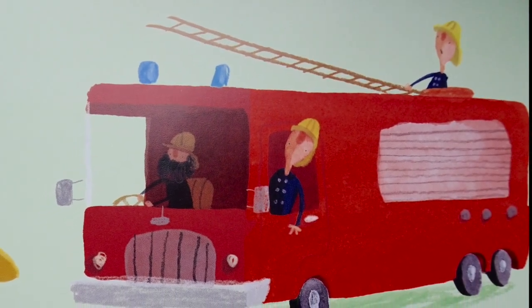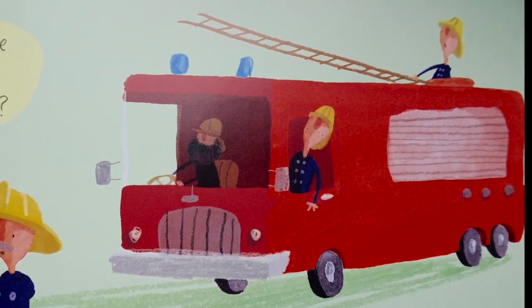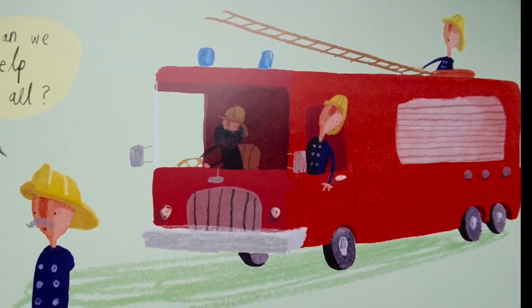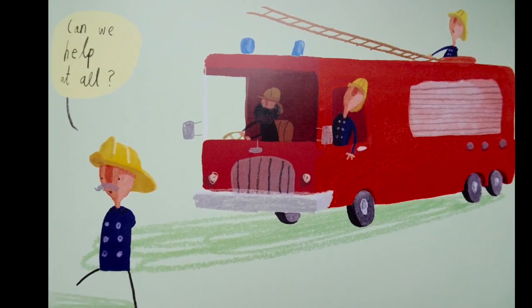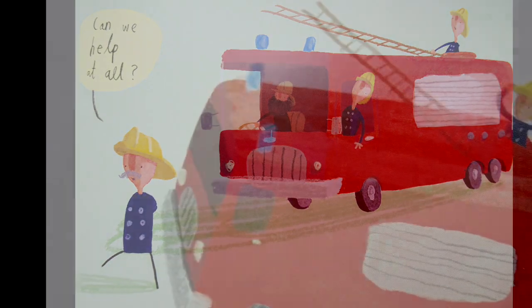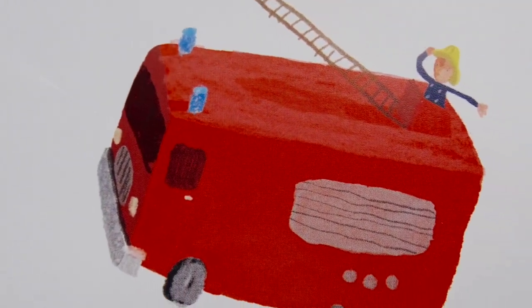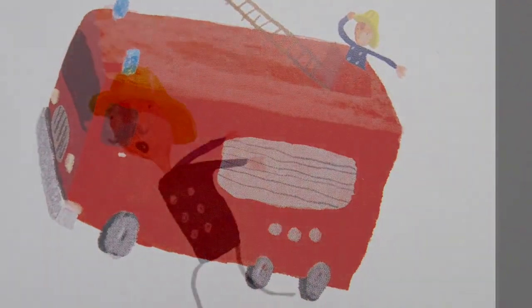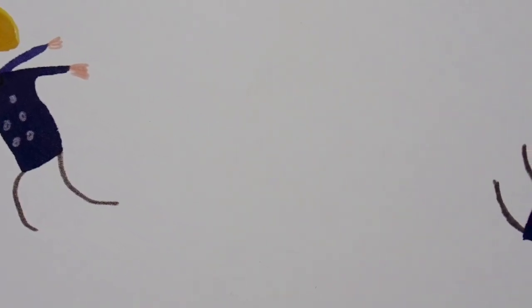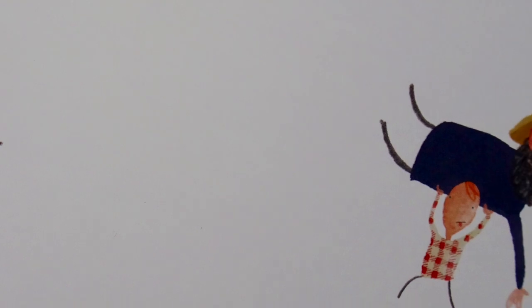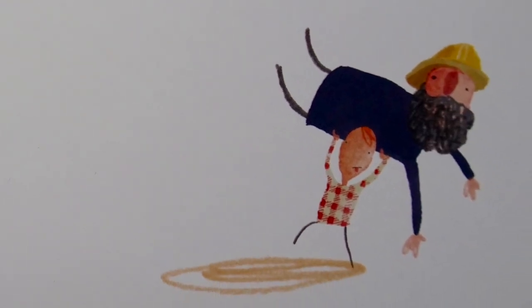A fire engine was passing and heard all the commotion. The firemen stopped to see if they could help at all. Can we help at all? And what do you think happened? Up they went, first the fire engine, followed by the firemen, one by one. And there they stayed, stuck between the orangutan and one of the boats.